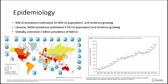The prevalence in the United States is 10 to 40 percent, and 3 to 5 percent of the U.S. population have the more severe form of NASH. Globally, an estimated 1 billion people have non-alcoholic fatty liver disease. On the right side of this panel, you can see that there's an increased incidence of non-alcoholic fatty liver disease, and it's been rising steadily in this century.